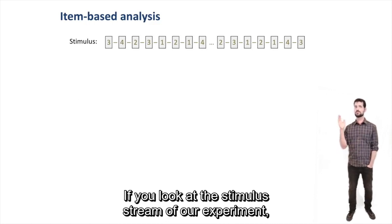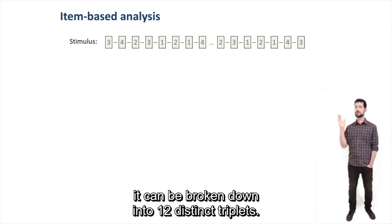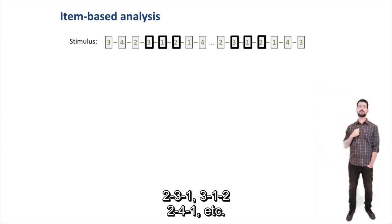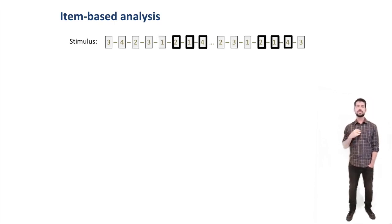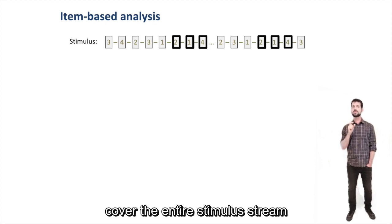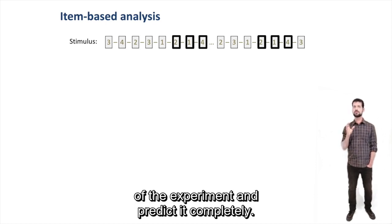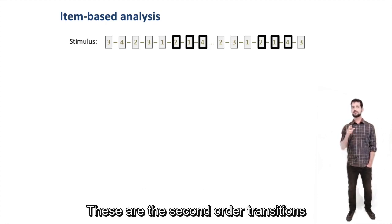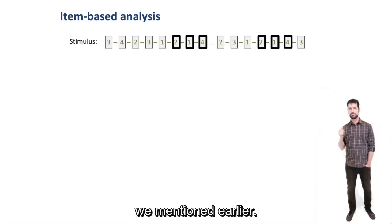So how do we go about analyzing that? If you look at the stimuli stream of our experiment, it can be broken down into 12 distinct triplets: 231, 312, 241, etc. These 12 interlocking triplets cover the entire stimuli stream of the experiment and predict it completely. These are the second-order transitions we mentioned earlier.